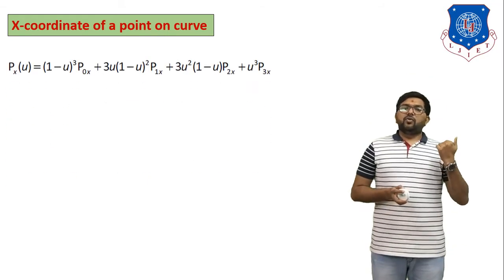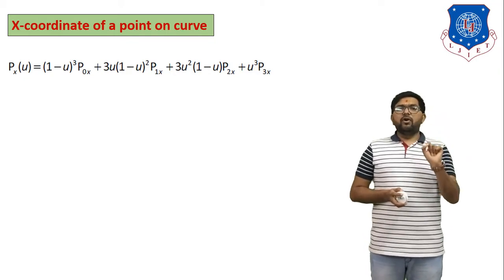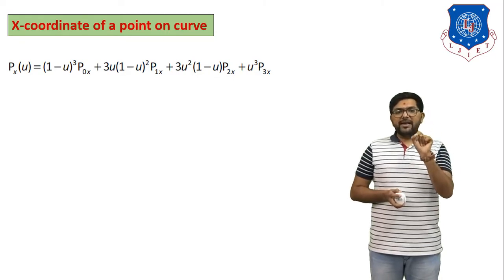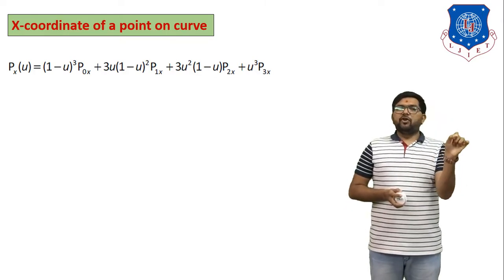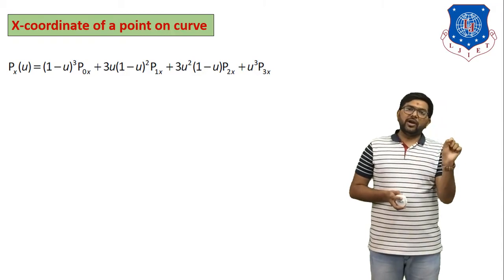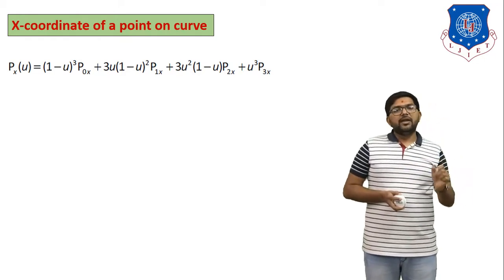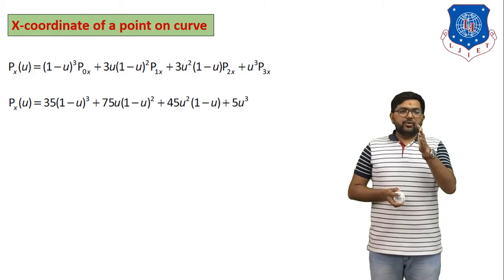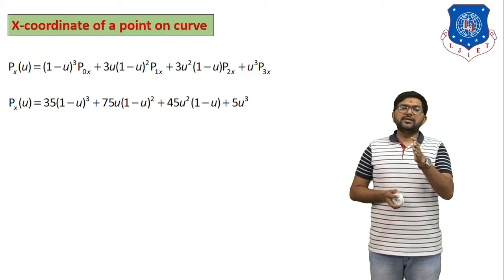For the x-coordinate, we write the equation with x-suffix: P(u)x = (1−u)³·P0x + 3u(1−u)²·P1x + 3u²(1−u)·P2x + u³·P3x. Here P0x, P1x, P2x, P3x are the x-coordinates of each control point. Substituting the x-coordinates: 35(1−u)³ + 75·u(1−u)² + 45·u²(1−u) + 5u³.